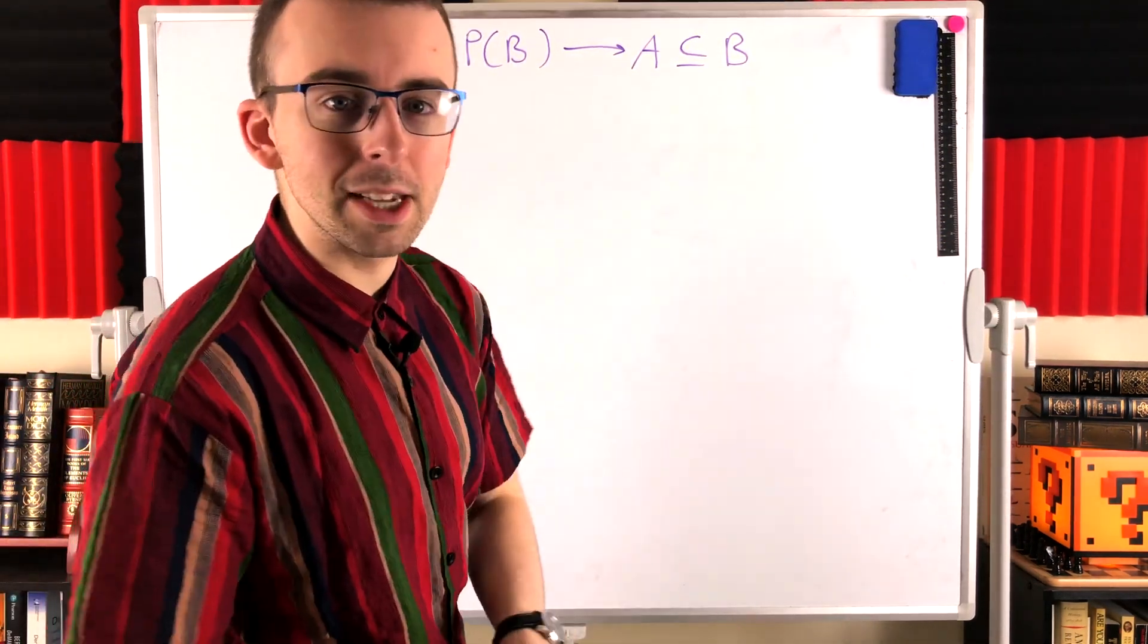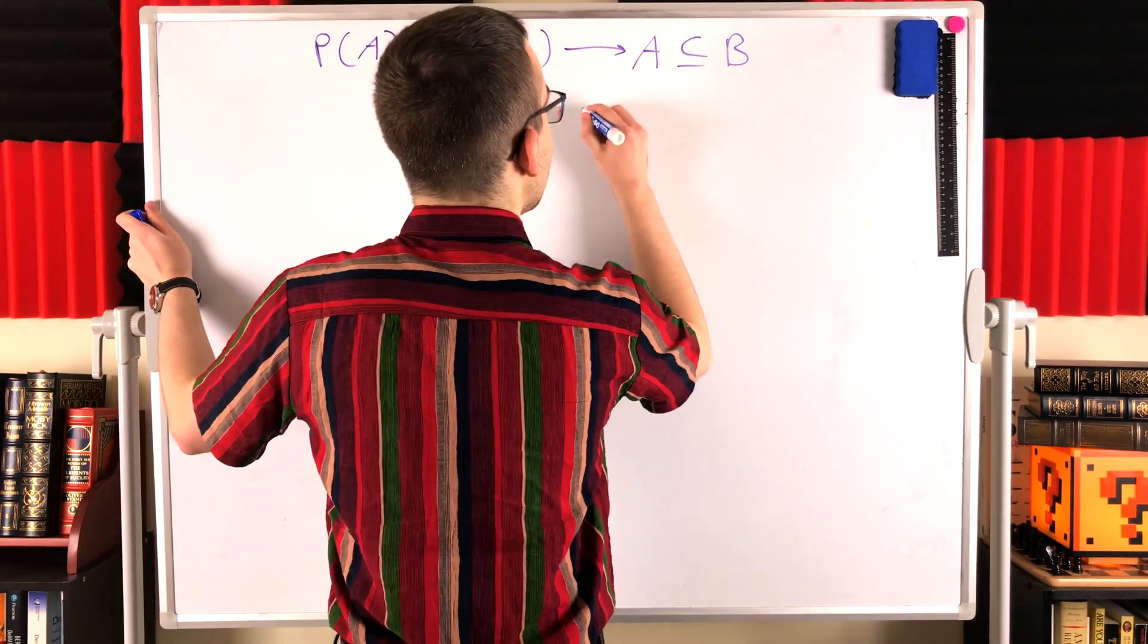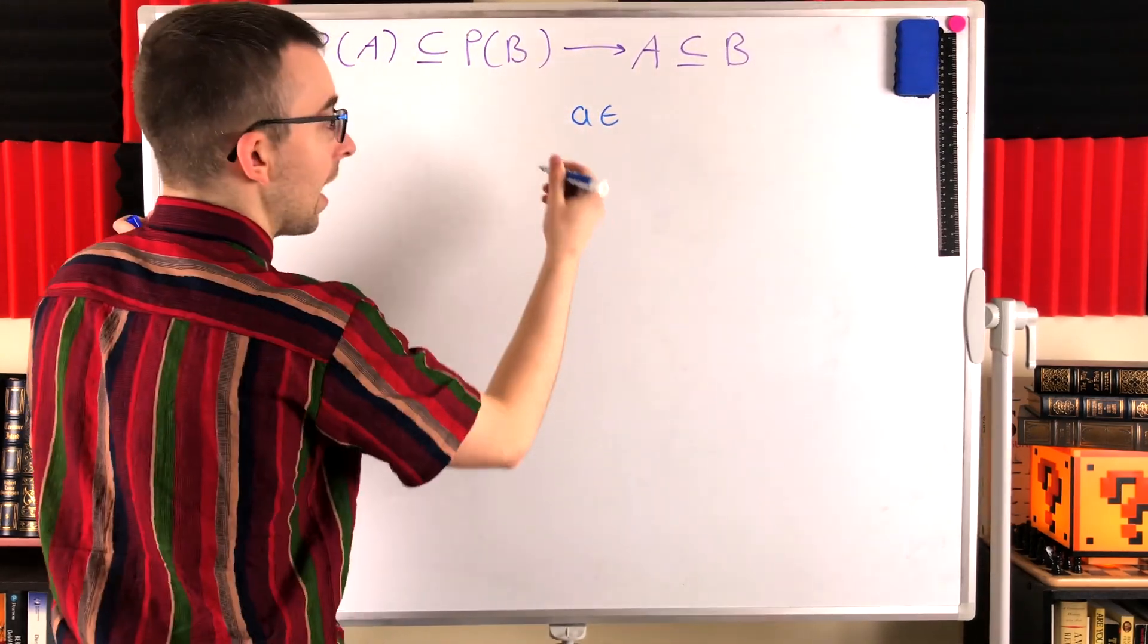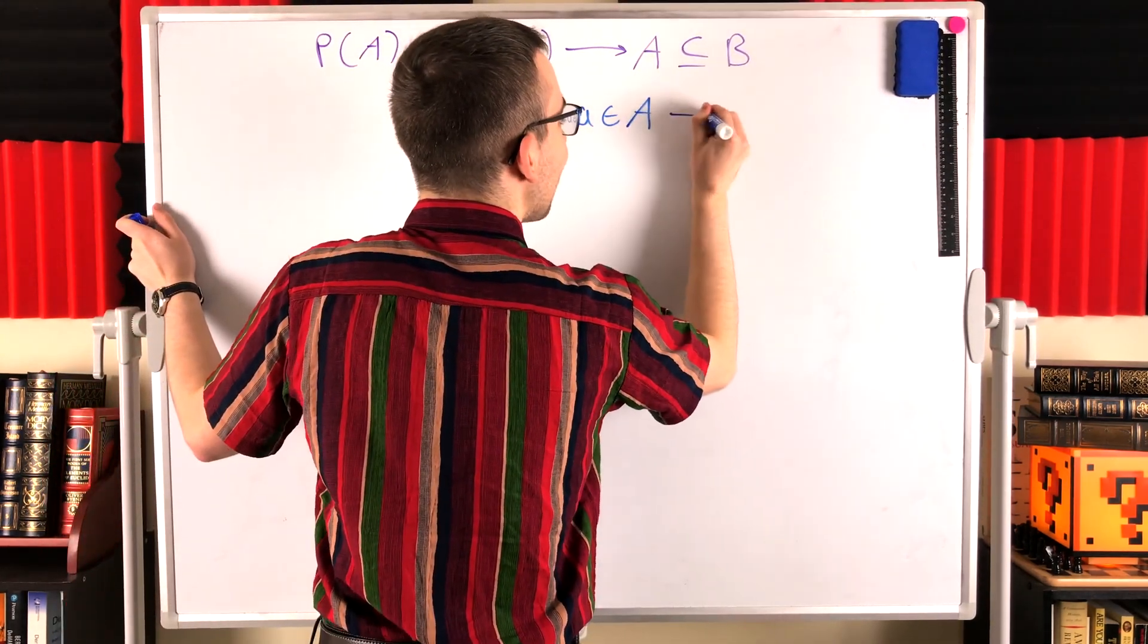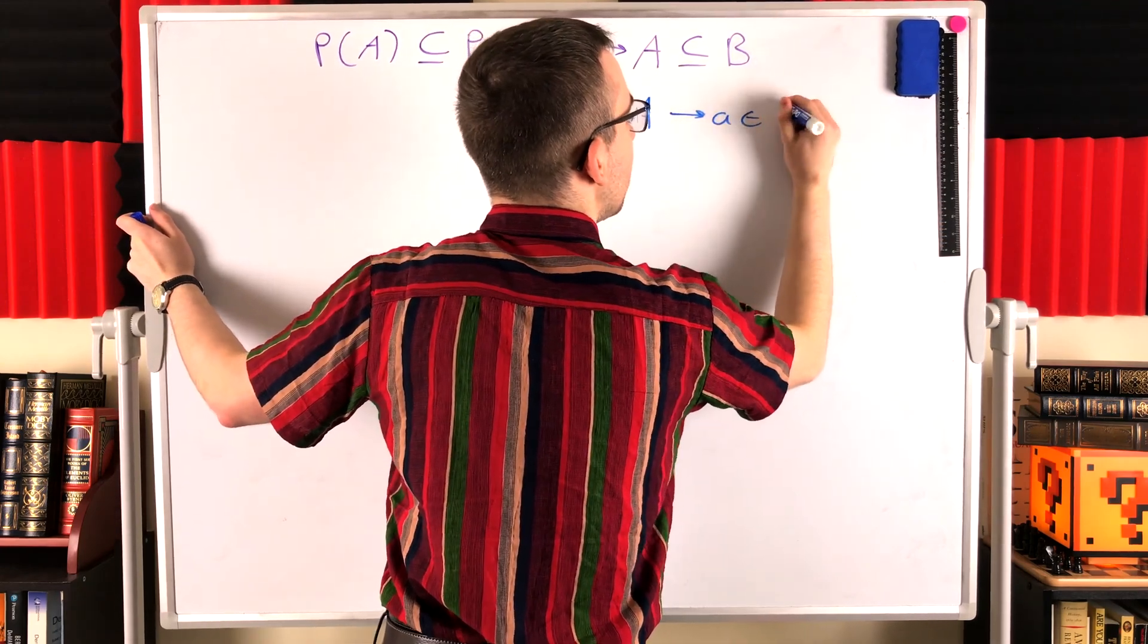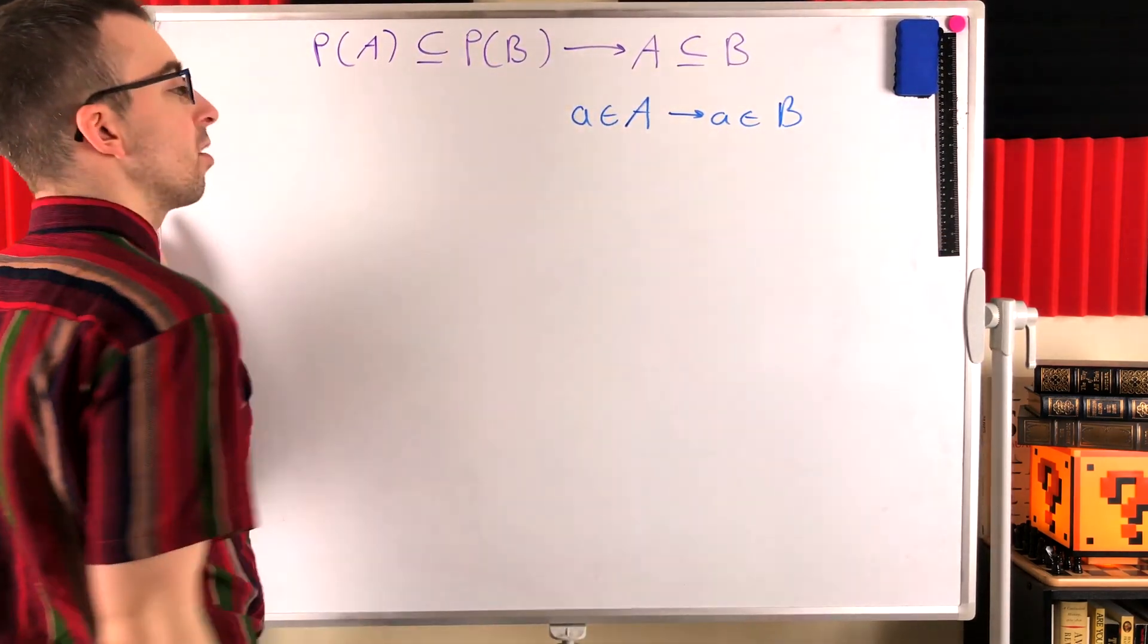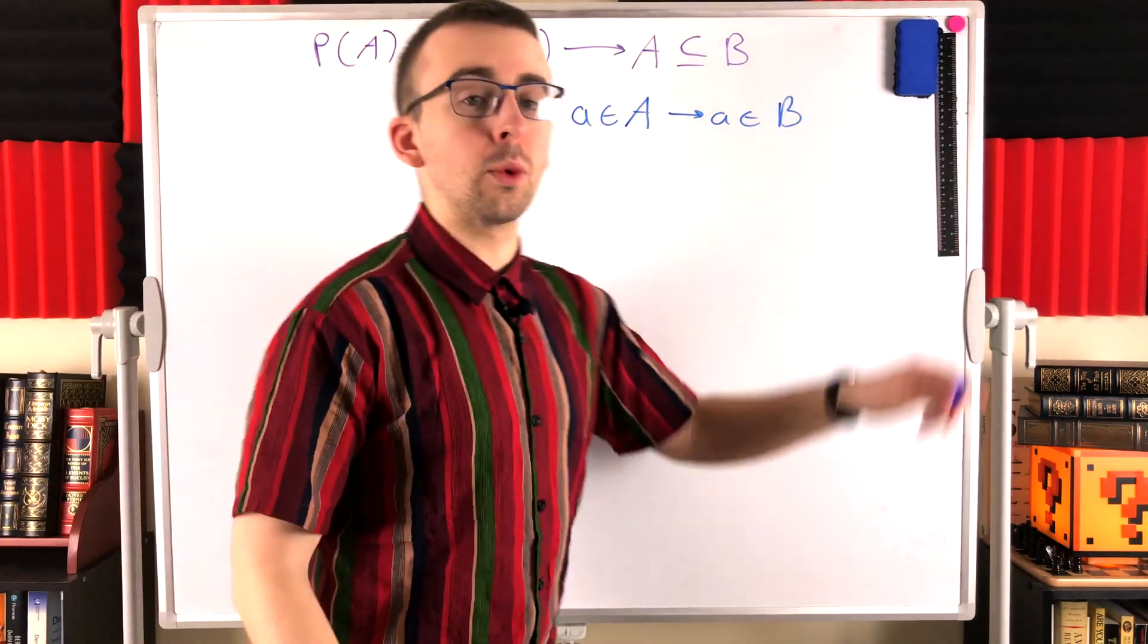So what does it mean for A to be a subset of B? Well, it means that any time an element is in A, that element must also be in B. That's what it means to be a subset. So that's what we need to show.